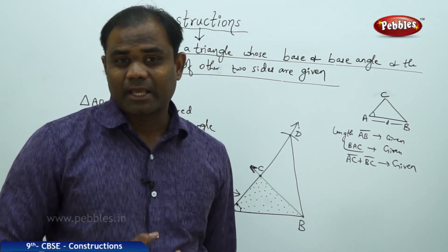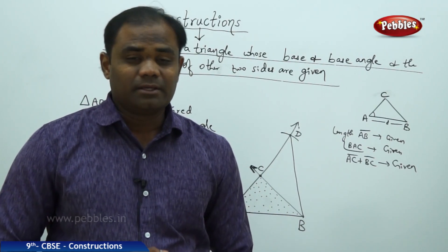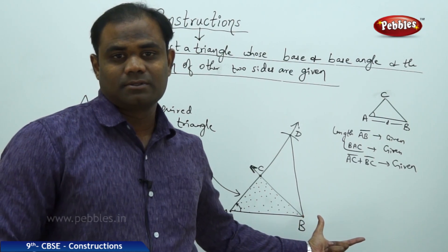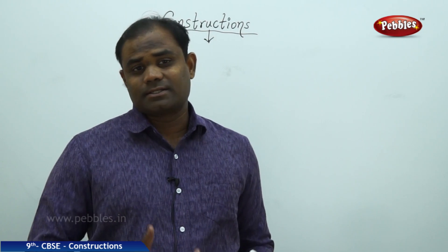Given the base, base angle, and sum of other two sides AC plus BC, triangle ABC can be constructed using this process.